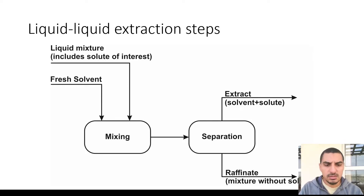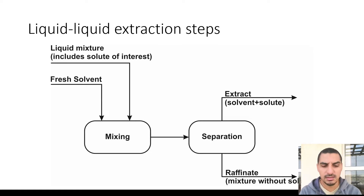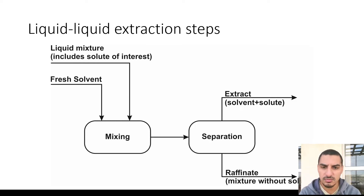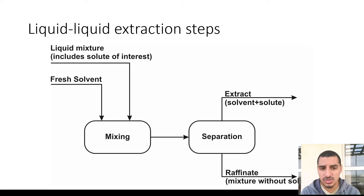Hello everybody. In this video we're going to talk about liquid-liquid extraction, which is one new topic in Aspen Plus. Liquid-liquid extraction is one of the processes used a lot in industry. It's used in the case of having a liquid mixture where we want to extract one of the components, and in some cases distillation might not be possible — either due to thermally sensitive components or having a mixture with a very low difference in boiling points, or an azeotropic mixture.